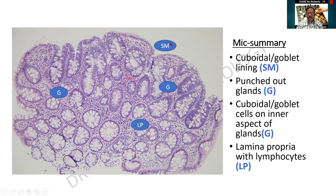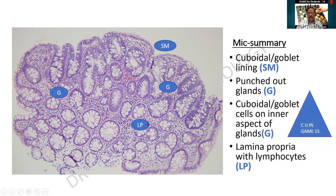There is a surface epithelium or mucosa that I am seeing, and these are the glands being supported by a stroma. I am finding multiple dot-like structures which are the lymphocytes. So cuboidal or goblet cell lining, punched-out glands, and this is the lining of the glands. The external surface is the basement membrane; on the inner aspect I am finding the glands. Some students draw the glands outside, which is a big mistake — in the gland it should be within it. The lamina propria is supported by lymphocytes. See you in GAME 15.